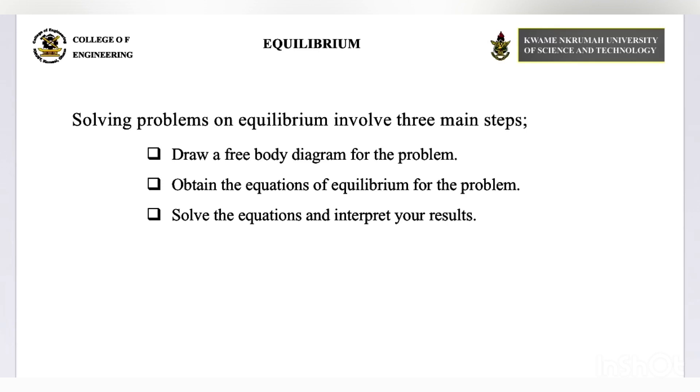When solving equilibrium problems, these are the three main steps you have to follow. First, you draw a free-body diagram for the problem. Then, you obtain equations of equilibrium for the problem. And finally, you solve the equations and interpret your results. There's a saying that understanding of the question is part of the answer. So make sure you read the question at least twice to understand it well. You draw your free-body diagram, obtain your equations, and finally, solve the equations.